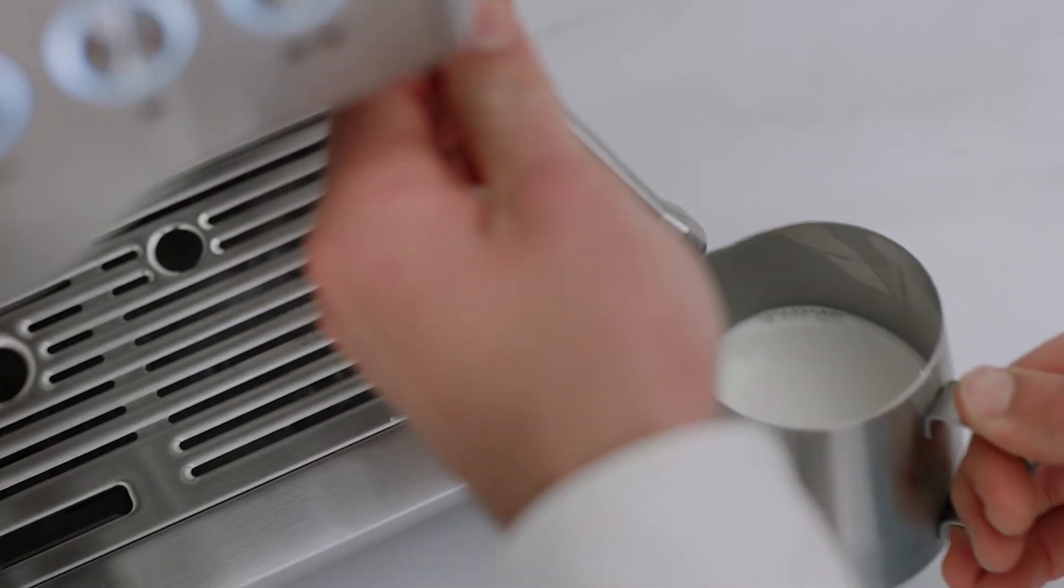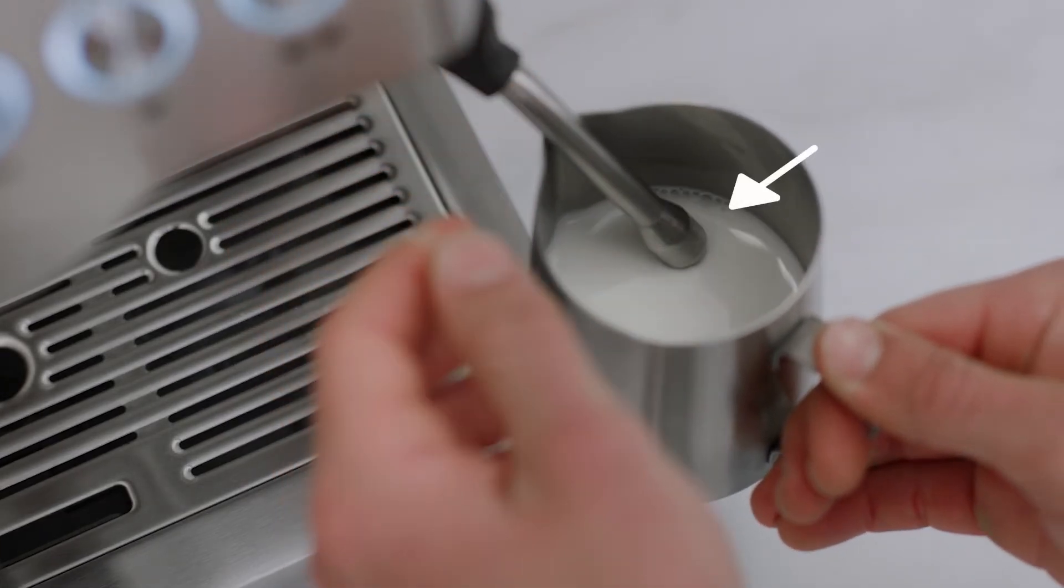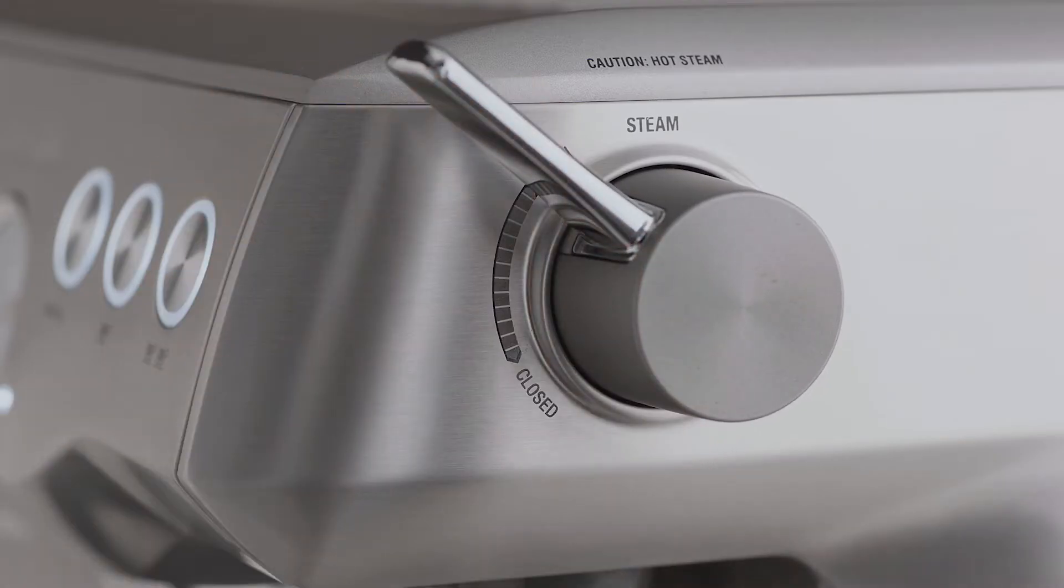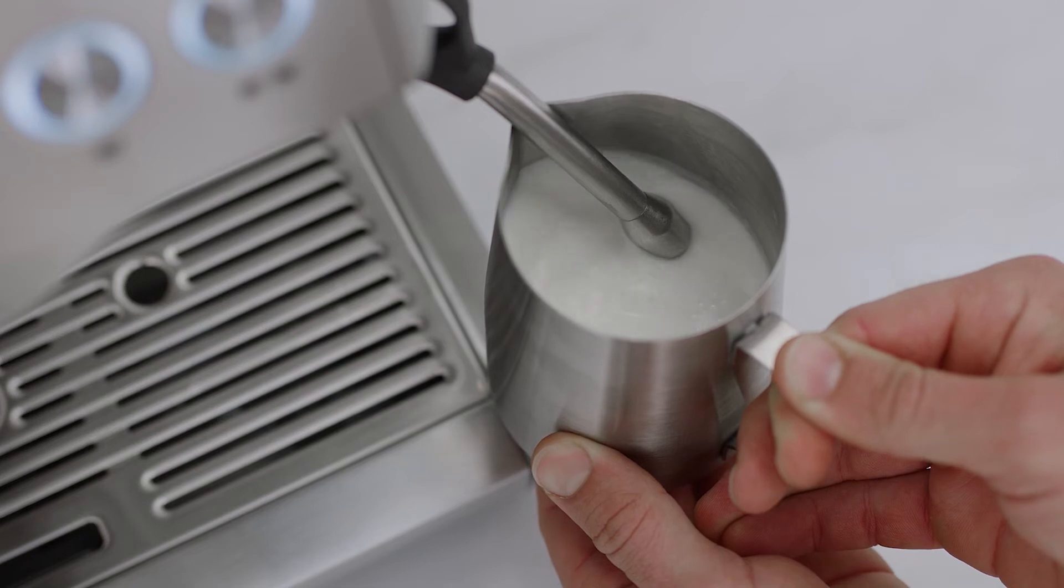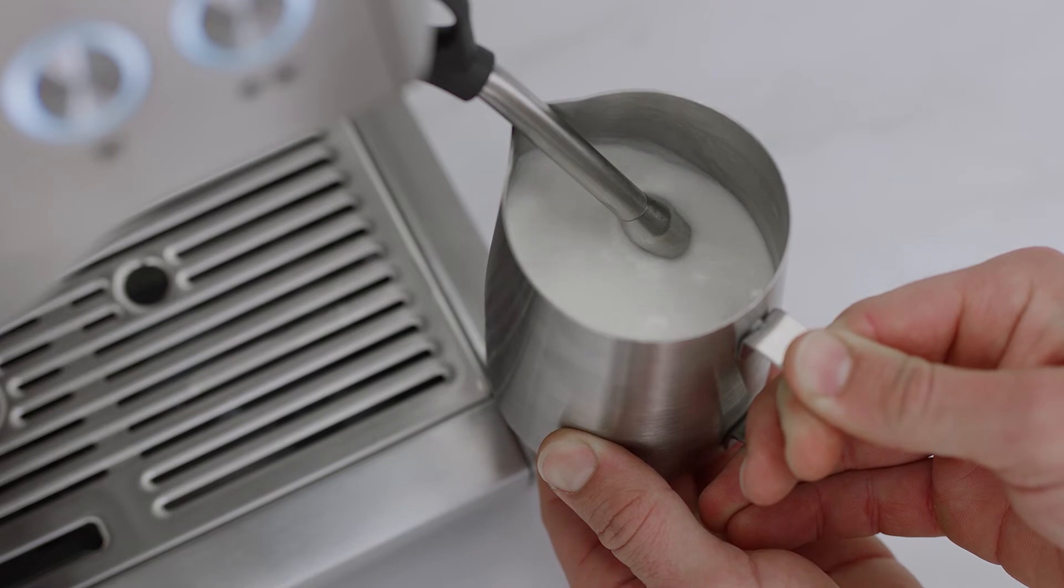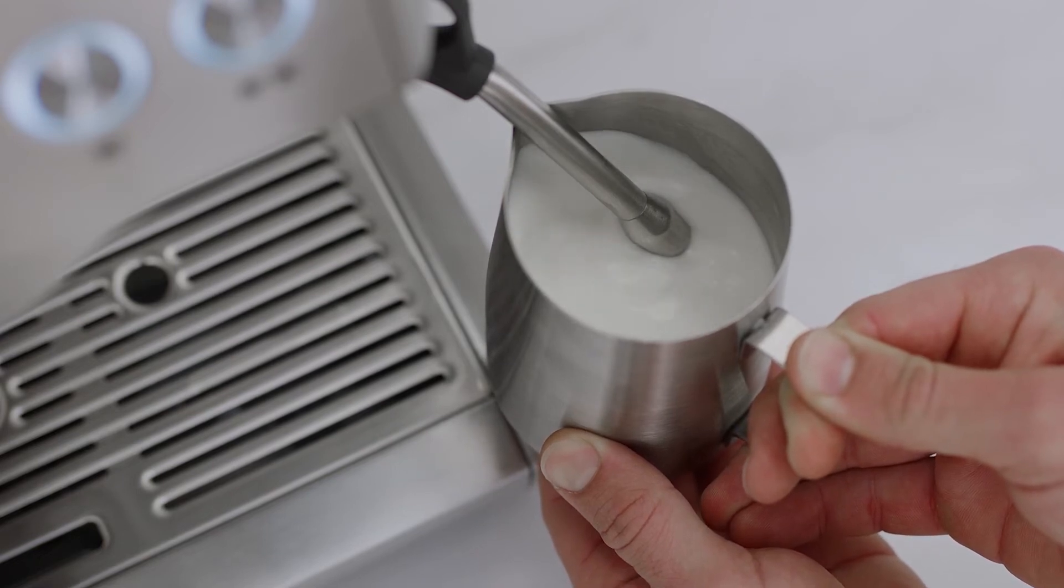With the steam tip slightly below the surface of the milk at about the 3 o'clock position, lift the steam lever or turn the steam dial again. Slowly lower the jug until the steam tip just breaks the surface of the milk. This creates a whirlpool in the milk and draws in air, adding texture and volume while heating.